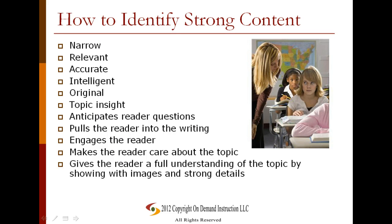So let's take a look at how, as a writer or a reader, you can identify strong content. This list identifies some of the specifics you're going to be looking at. You're going to look for writing that has a narrow topic, is very relevant to current events, is accurate, intelligent, and original. It demonstrates topic insight and anticipates and answers readers' questions. It pulls the reader in and keeps their attention throughout, and gives the reader a full, thorough understanding of the topic by showing with images and strong details, providing depth and breadth of information.